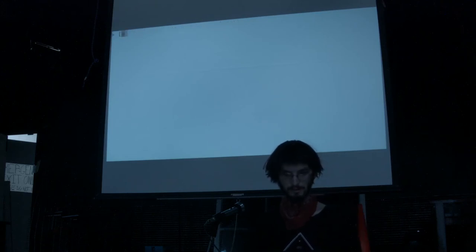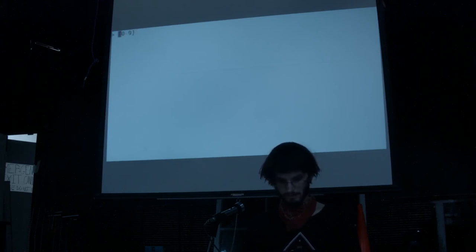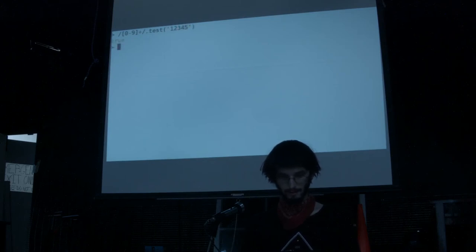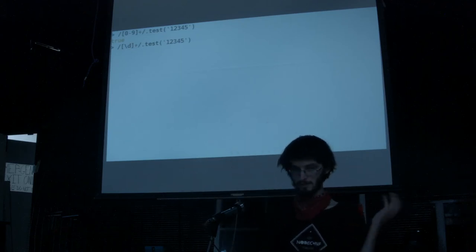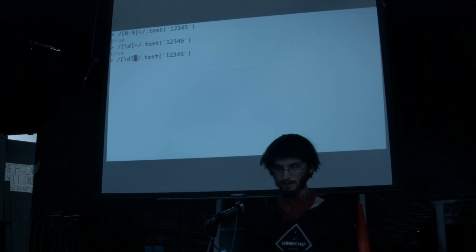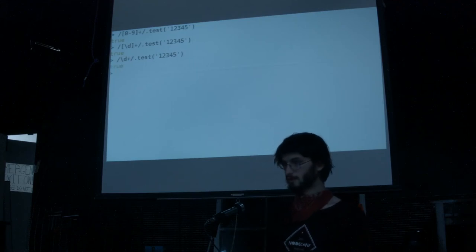There are some shorthand things you may have seen. Instead of doing zero-through-nine, if we want to match some text — zero-through-nine plus .test — it's true. You can use the shorthand backslash d, which means the same thing. You can use it in a capture group or just by itself. Backslash d is zero through nine.